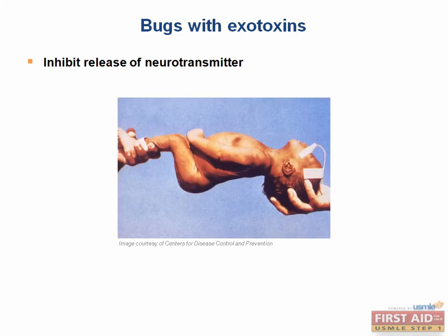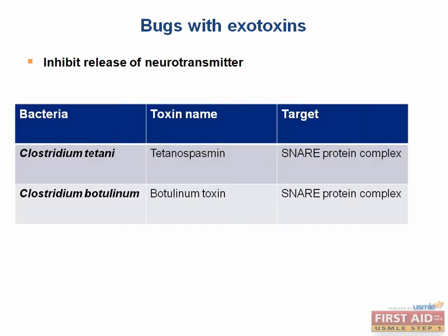Here is an example of the rigidity produced by tetanus toxin, which will be vastly different from the muscle tone seen with the next toxin. Tetanus immunization is part of the Tdap series: tetanus, diphtheria, and acellular pertussis.